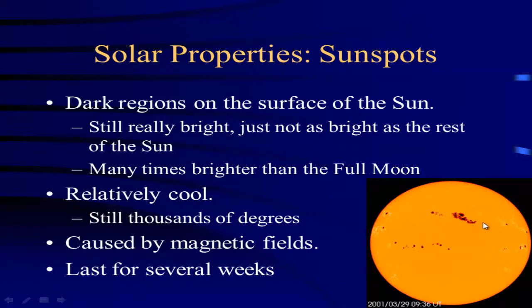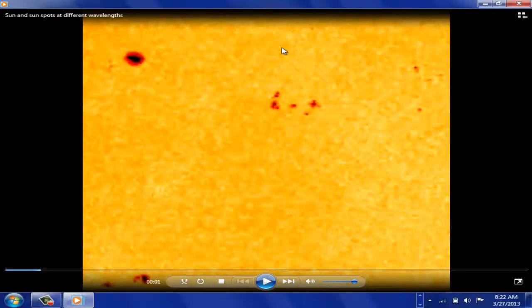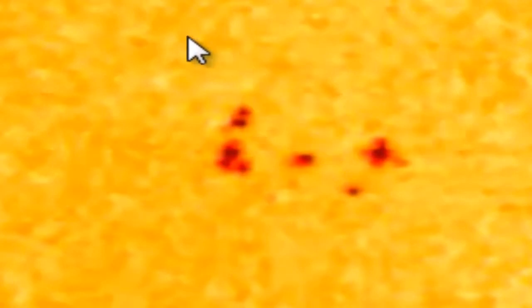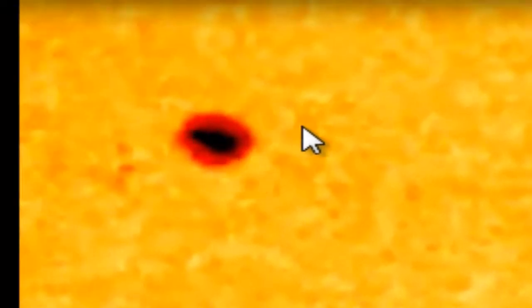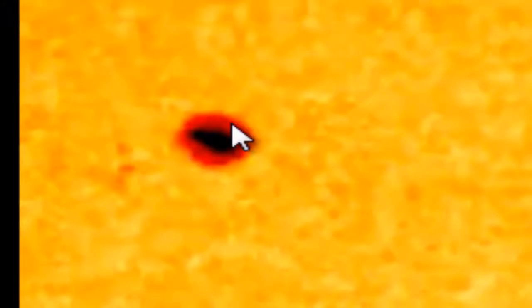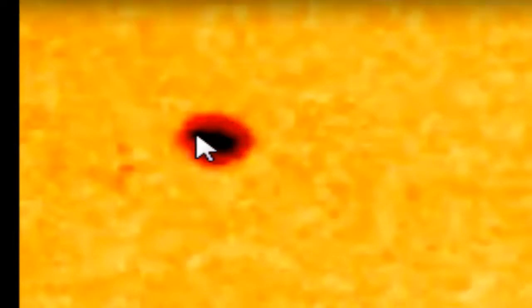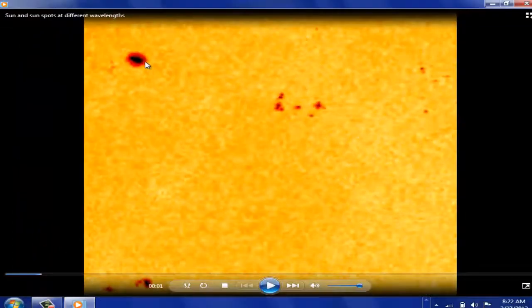If you were to watch sunspots over the course of time, like Galileo did, you would see that they move across the sun's surface and actually prove that the sun is rotating. Sunspots can form in groups or individually. Usually there is a darker central part called the umbra — just like Earth's shadow — and the lighter outer part is called the penumbra, which is not quite as cool. Magnetic fields going in or out of these areas magnetically bind the atoms and cool them down.